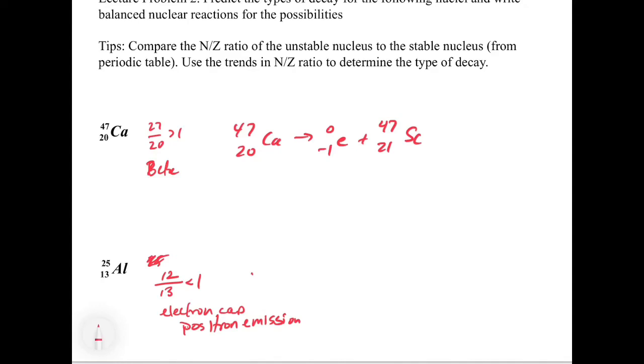If we were to do a positron emission, and we have 25 over 13 aluminum, the positron on the other side is going to be 0 over +1 e. You have to memorize that, what the positron is. Once you have that, then you know that what we're going to have is 25 because the mass number is 0 for the positron, and we're going to have 12 on the bottom. If we look that up, this is going to be a magnesium atom.